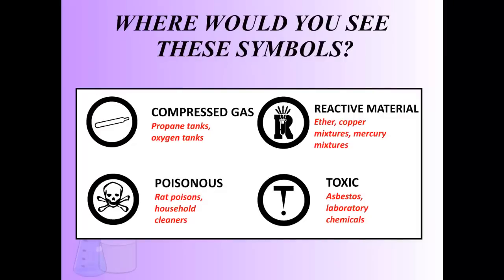The first four symbols are: compressed gas, reactive material, toxic material, and poisonous. Each of these labels uses a very specific symbol inside of a circle. That makes them a WHMIS symbol, and they're known worldwide for what could be inside the container.